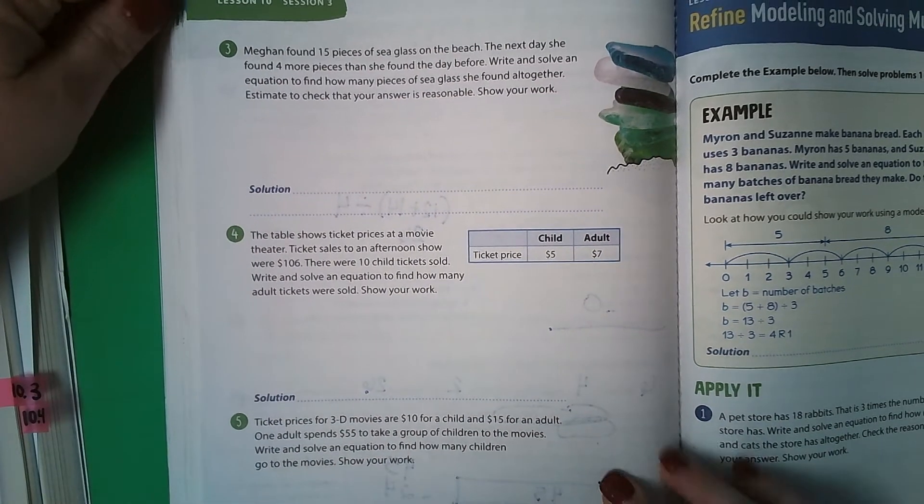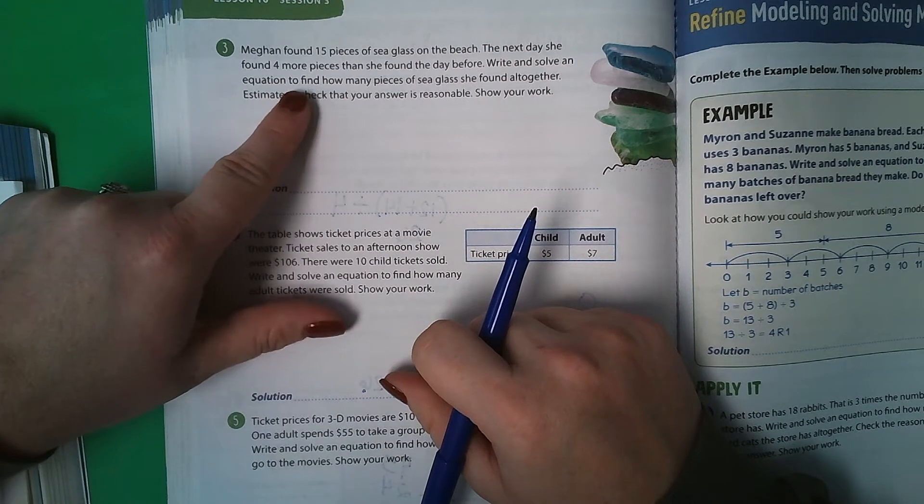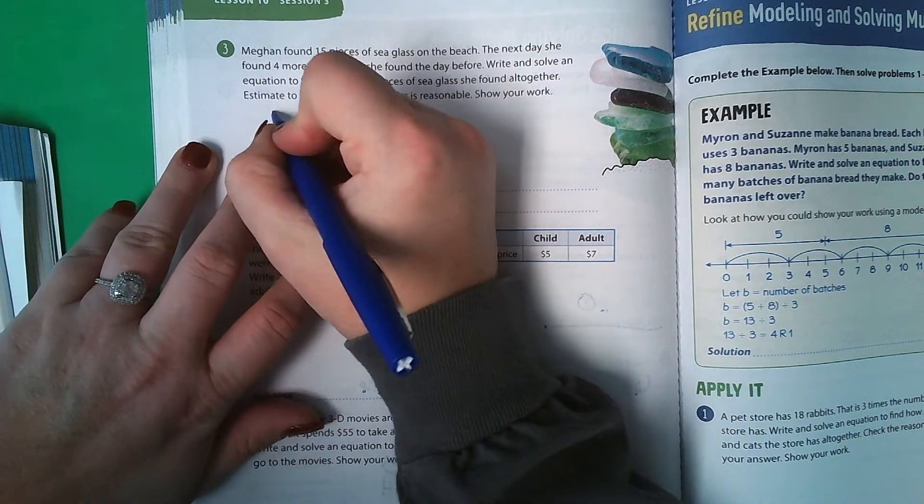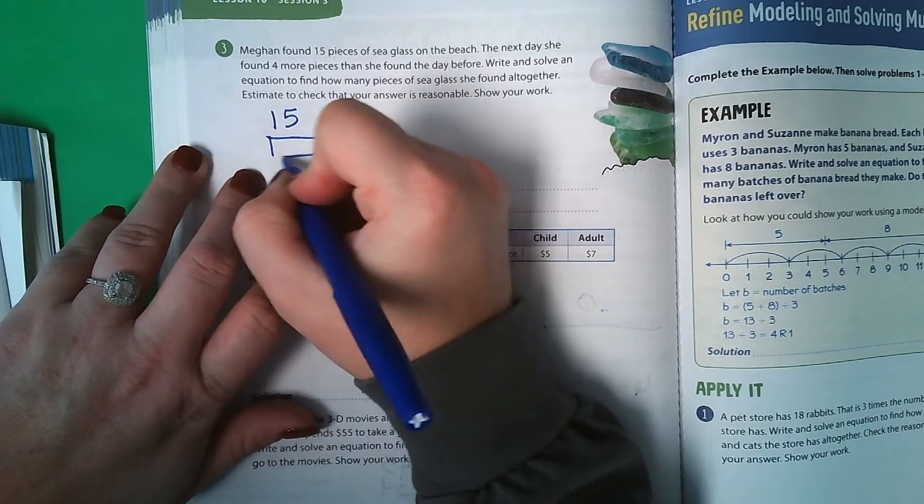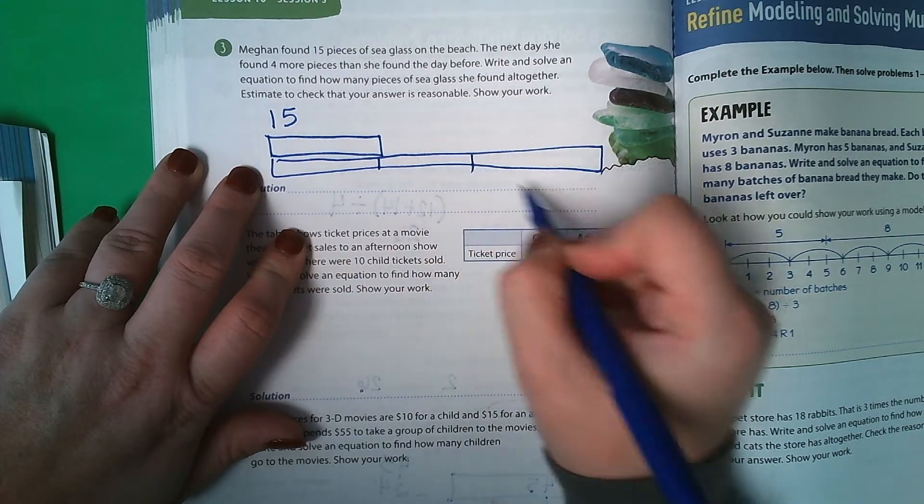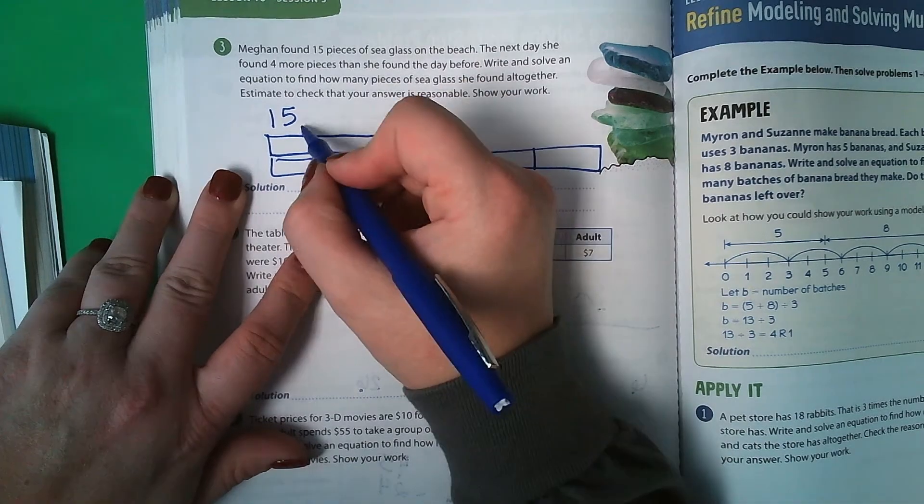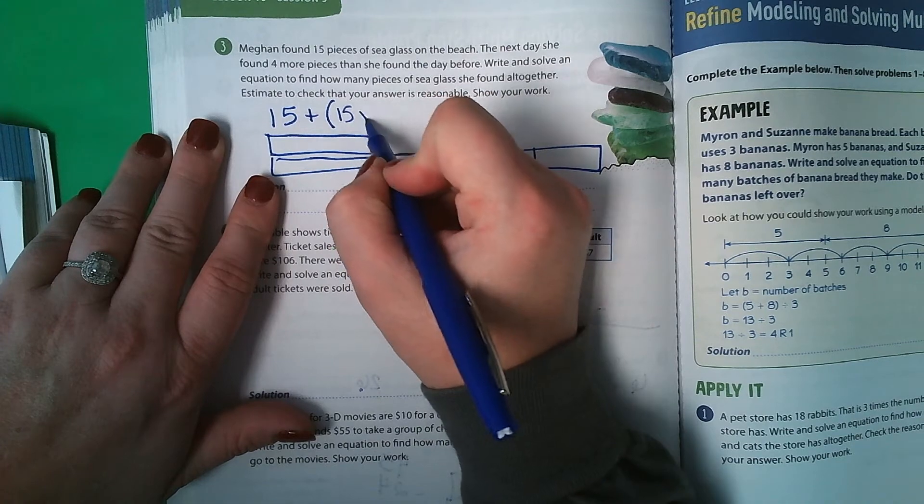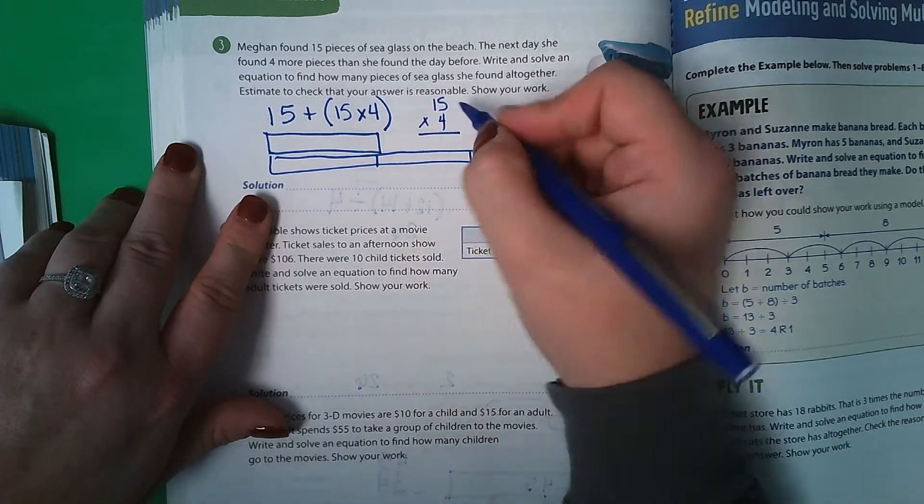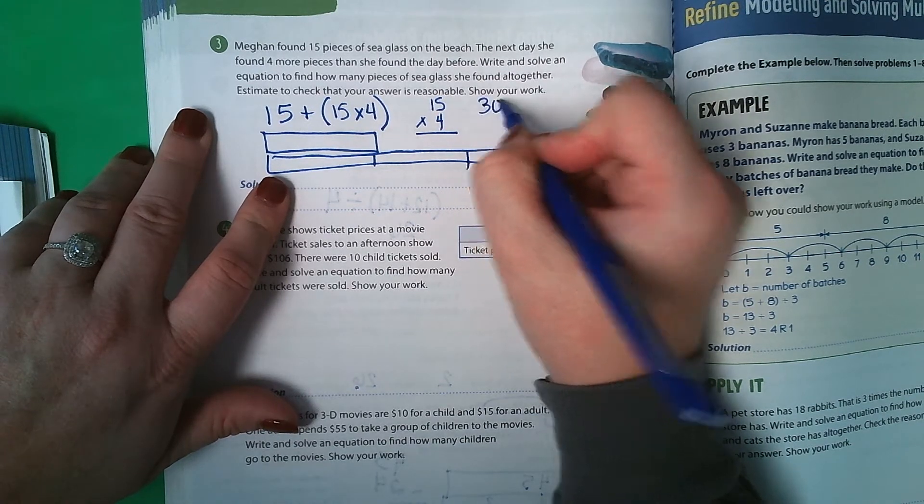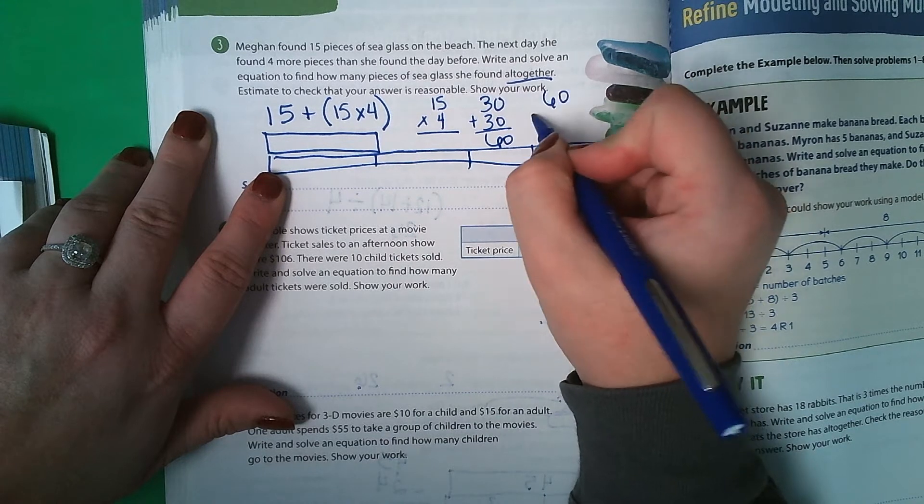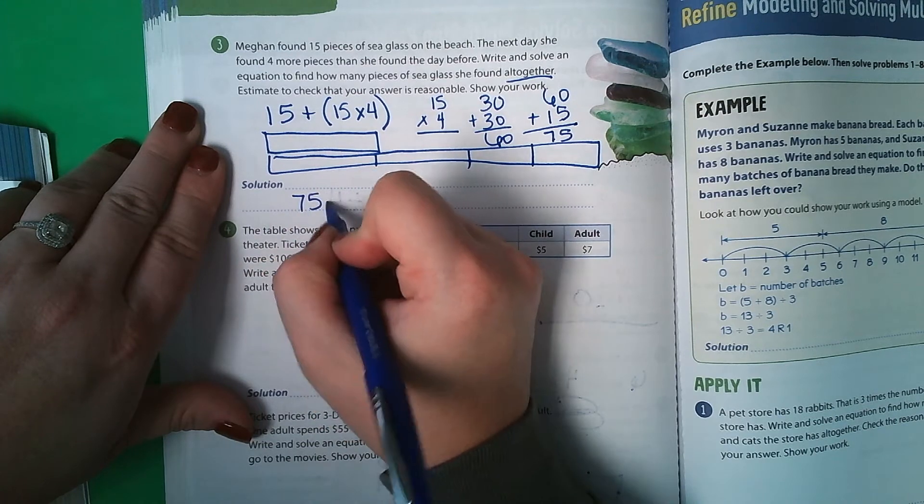Page 208. Megan found 15 pieces of sea glass on the beach. The next day she found 4 more pieces than she found the day before. Write and solve an equation to find how many pieces of sea glass she found all together. Well, the first day she found 15. The next time she found 4 times that amount. So 1, 2, 3, 4. So then that means it's going to be 15 plus 15 times 4. Well, first I need to do 15 times 4. I can also skip count. 15 2 times is 30. And 30 plus 30 is 60. But then it says all together. So 60 plus 15 is 75. So 75 pieces.